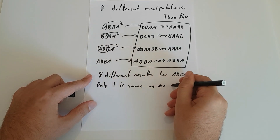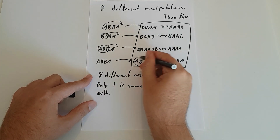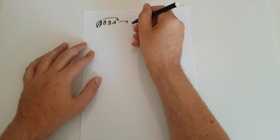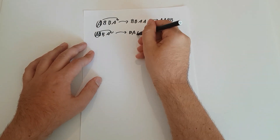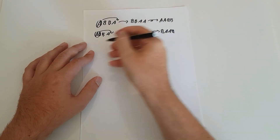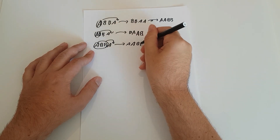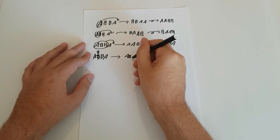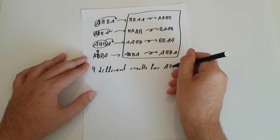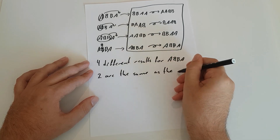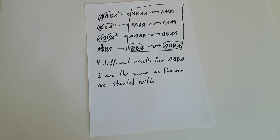Of these eight results in the box, only one is the same as the one we started with. Then we look at the more true ABBA bracelet with one of the B's in reverse. We apply the same manipulations: move a letter over and also flip, move two letters over and also flip, move three letters over and also flip, do nothing and also flip. This time, there are four letter combinations in the box, and two of the results are the letter combination we started with.